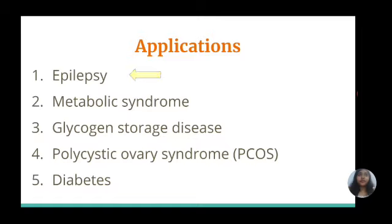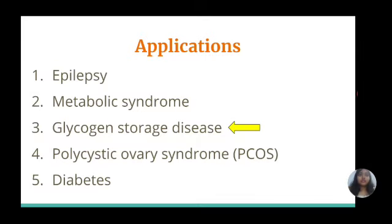Metabolic syndrome, sometimes referred to as pre-diabetes, is characterized by insulin resistance and various symptoms like elevated triglycerides, high blood pressure, and elevated fasting blood sugar. Ketogenic diets may reduce abdominal obesity, triglycerides, blood pressure, and blood sugar in people with metabolic syndrome.